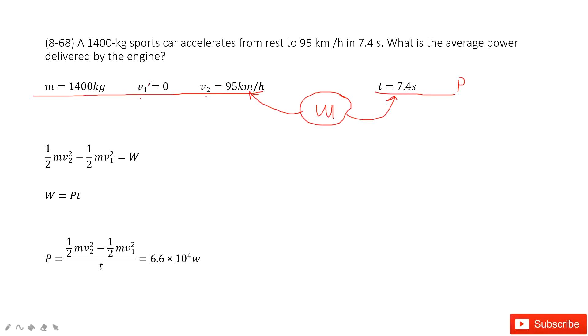If you know mass, initial velocity, final velocity, how can you find the work? There, work-energy principle. The net work equals final kinetic energy minus initial kinetic energy.